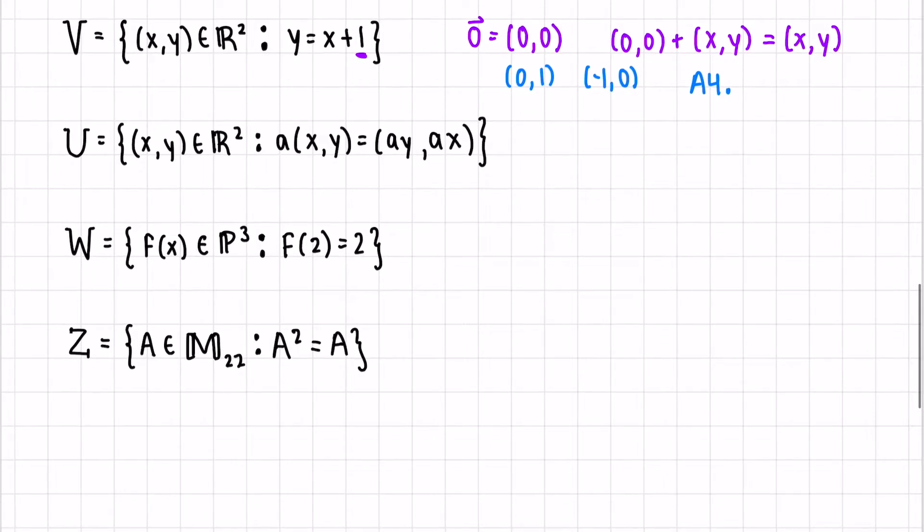There's no possible way to generate this 0 vector. So A4, the fourth axiom, fails. The 0 vector is not included in V. It's not a vector space. In fact, all lines or planes that are vector spaces must pass through the origin in order to avoid this problem.